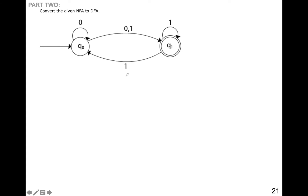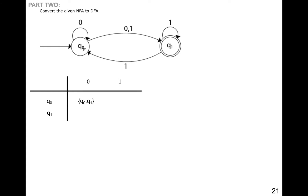First of all, let's create our transition table. In the topmost we have the alphabet, and on the leftmost we have the states. So if 0 is processed by Q0, it will remain in Q0 and also go to Q1. For 1, it will go to Q1. For Q1 with 0, it will go to phi, and for 1 it will go to Q0 and Q1.